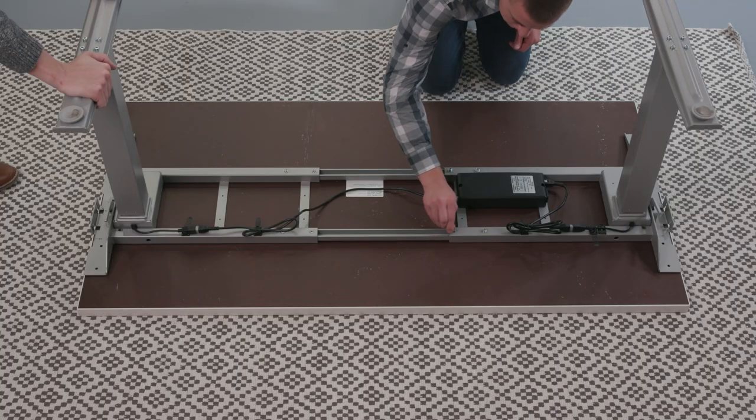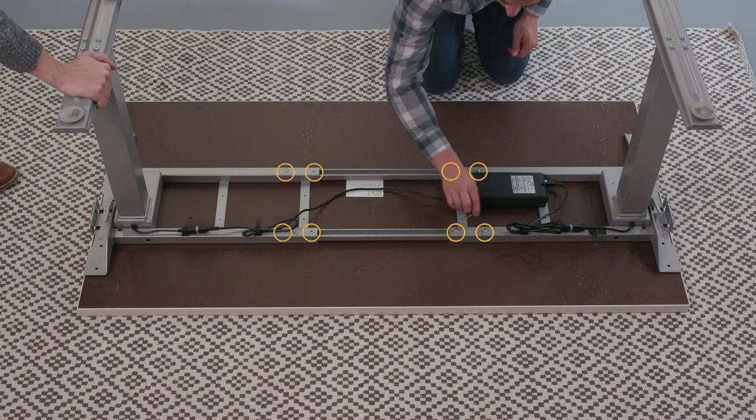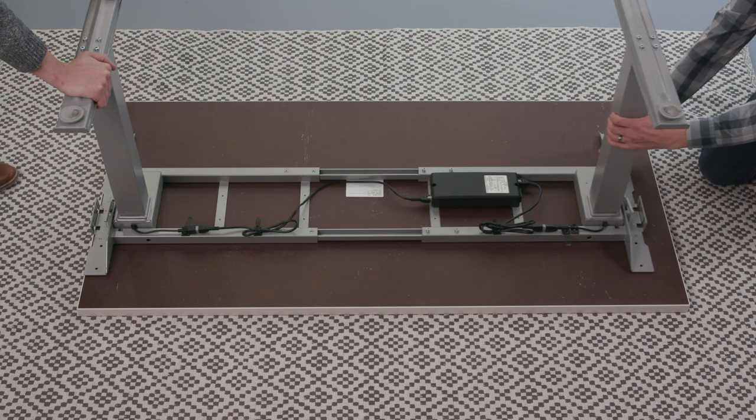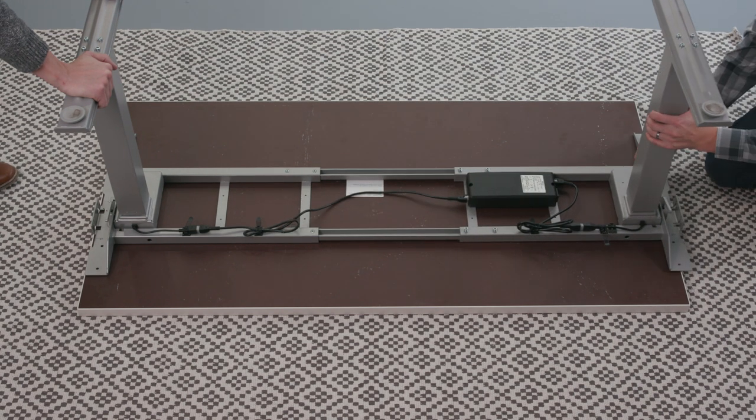If the base does not meet the width of the table, adjust the base by loosening the eight screws on the inward side of the cross channels. Expand or contract the cross channels and retighten the screws in the desired position.